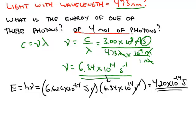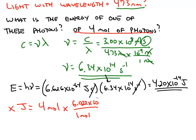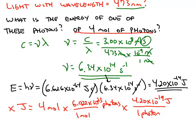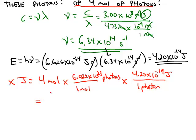If we want to find the energy of 4 moles of photons, we simply scale this up using dimensional analysis. Every mole contains Avogadro's number of particles, and we just found that one photon of this light has an energy of 4.2 times 10 to the negative 19th joules. So 4 moles of photons gives us 1.01 times 10 to the 6th joules.